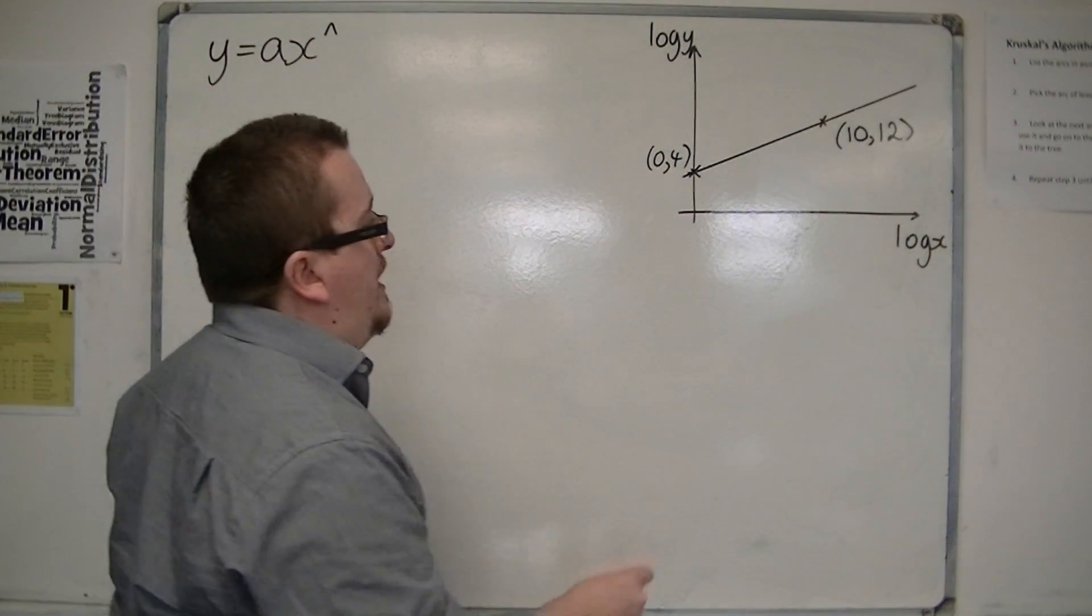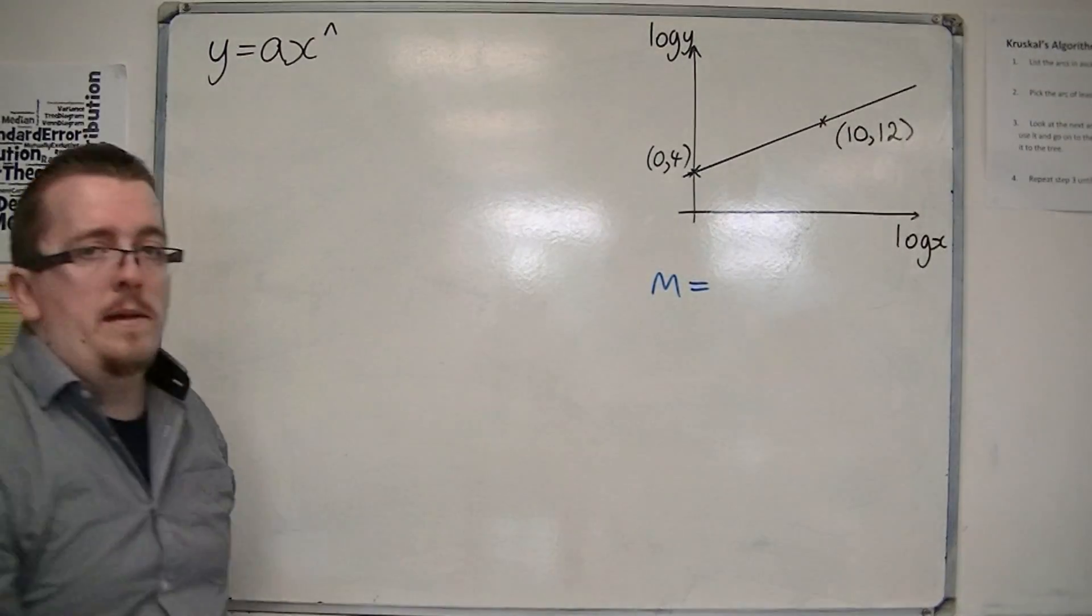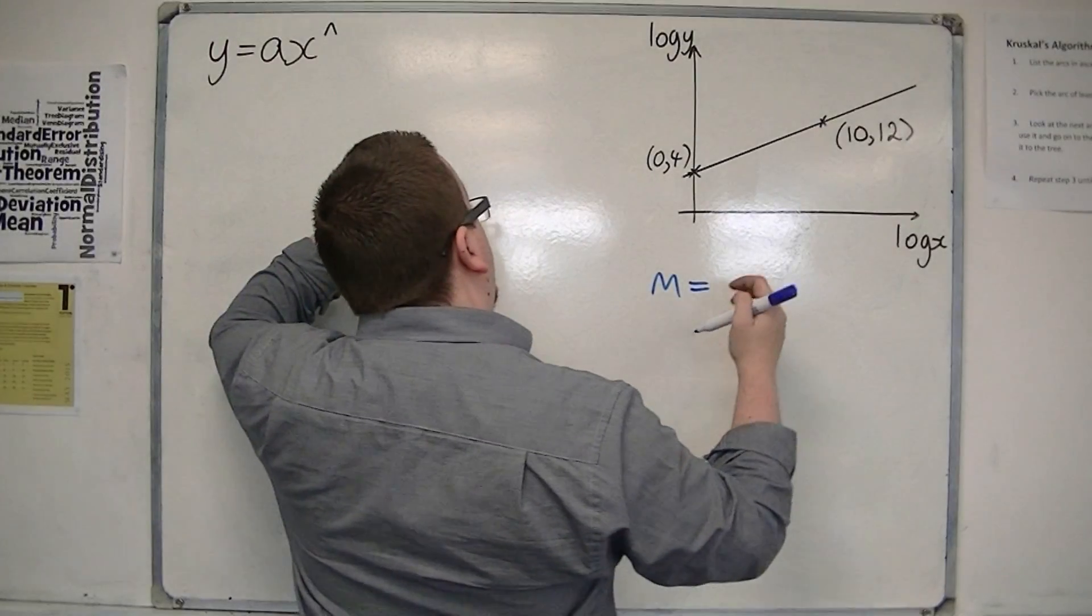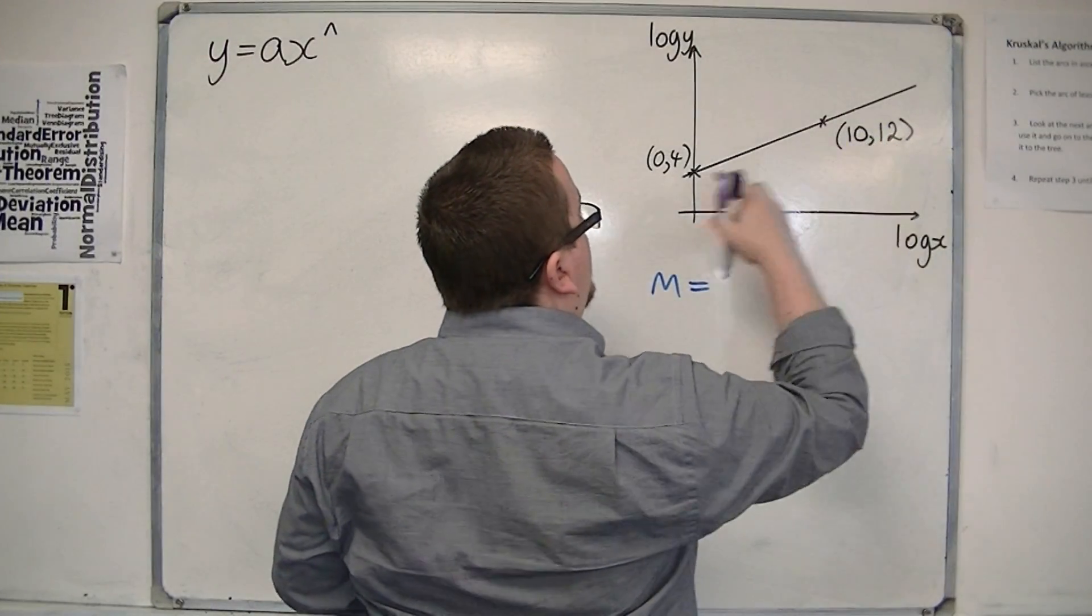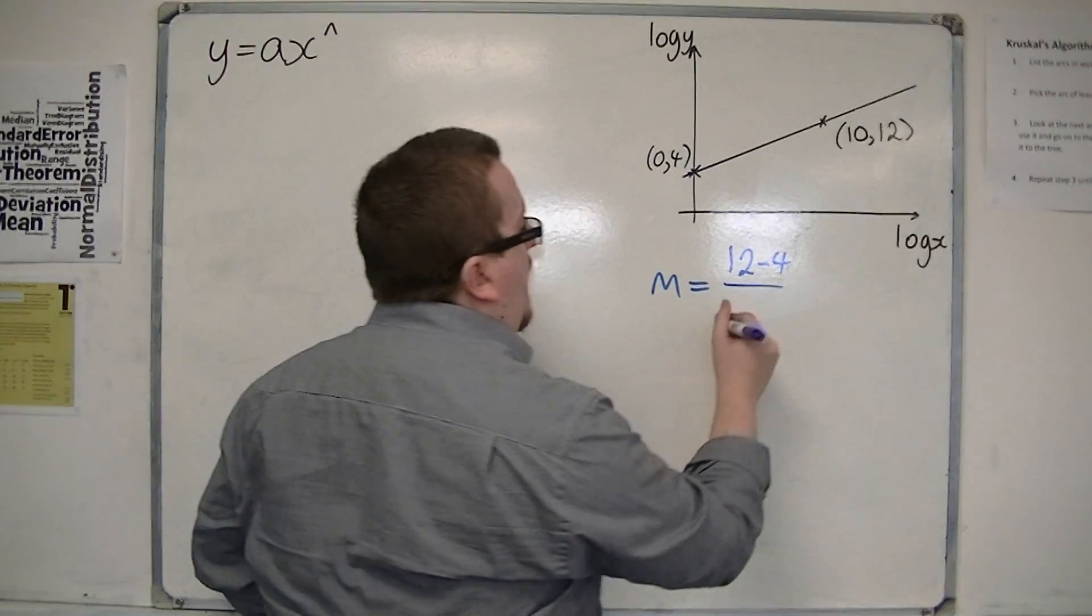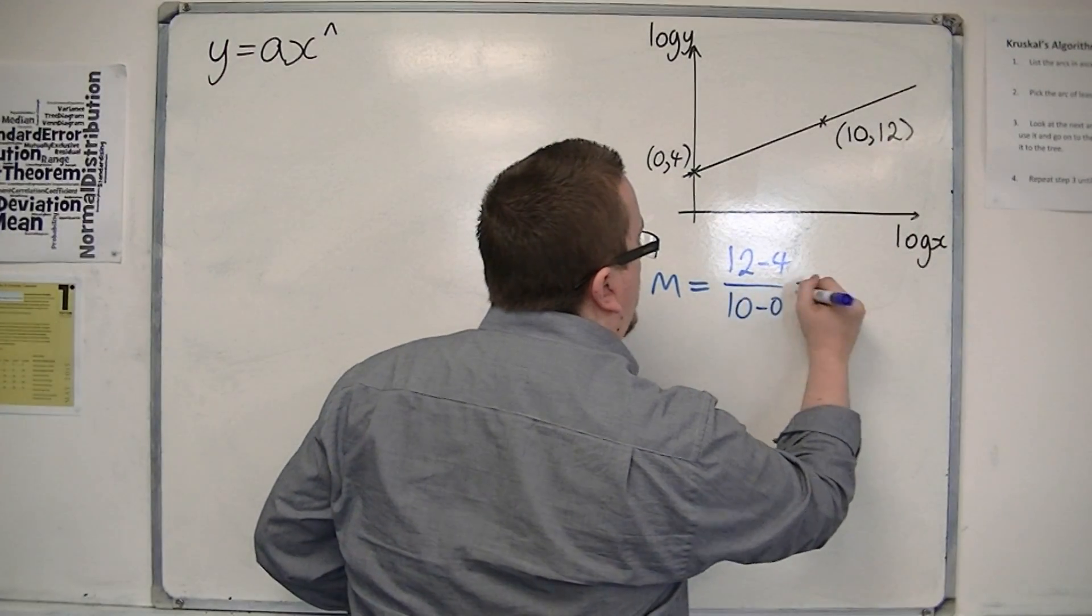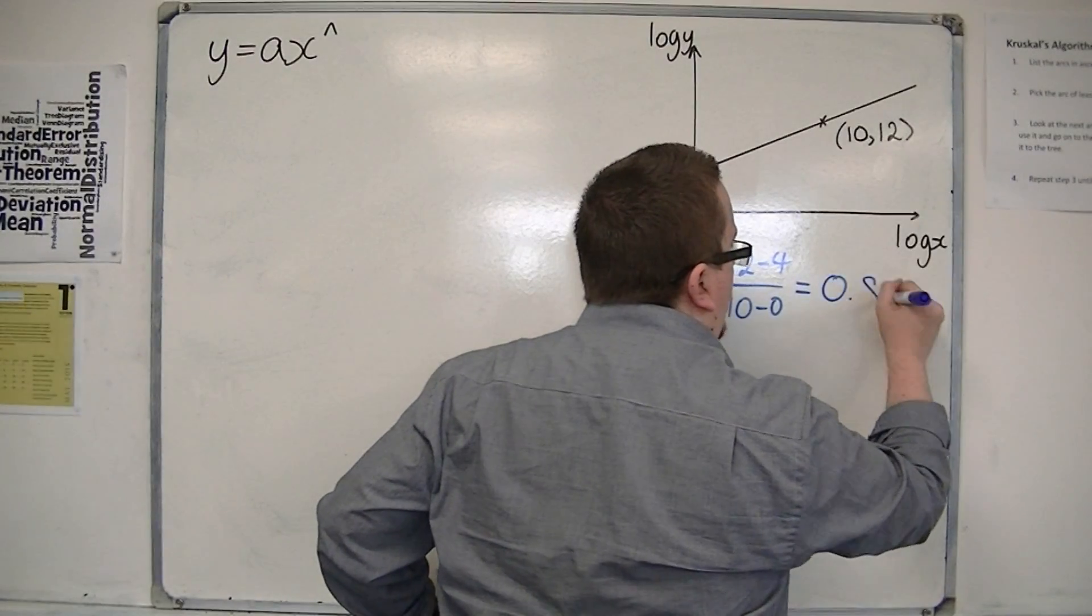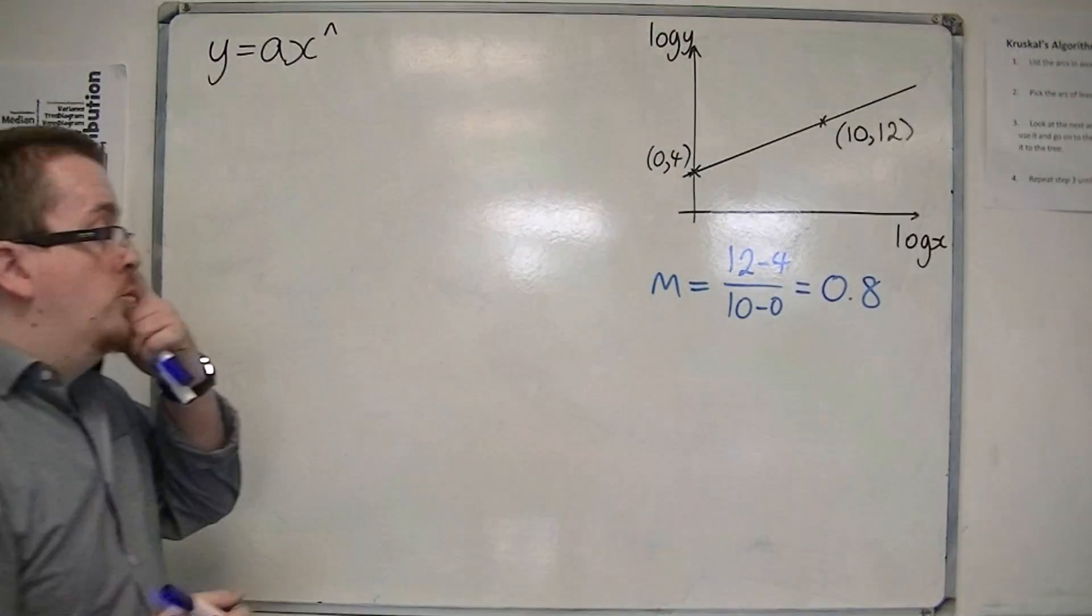So the first thing I really want to do is find the gradient of the line m. So m is going to be the difference in the y-coordinates, so 12 take away 4, and divide that by the difference in the x-coordinates, 10 take away 0. So I've got 8 divided by 10, so 0.8. So that would be the gradient of the line.